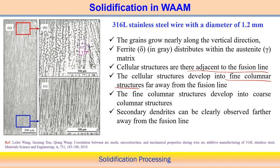Far from the fusion line, cellular structure forms but is usually fine. Fine columnar structure is also observed, which develops into coarse columnar structure — fine columnar within the coarse columnar structure. Secondary dendritic arms are observed clearly further away from the fusion line. The structure also depends on welding speed and arc power used.